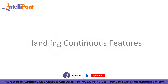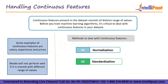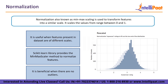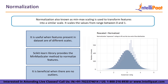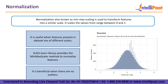Let us look at handling continuous features. Continuous features present in the dataset consist of a distinct range of values. Before you train machine learning algorithms, it is critical to deal with continuous features in your dataset. Methods to deal with continuous features are normalization and standardization. Normalization is a scaling technique used in machine learning to change the values of numerical columns in a dataset to use a common scale during data preparation. It is only required when the ranges of machine learning model features differ. Also known as min-max scaling, it transforms features to a similar scale, scaling values from 0 to 1. Scikit-Learn library provides the MinMaxScaler method to normalize features, and it is beneficial when there are no outliers.